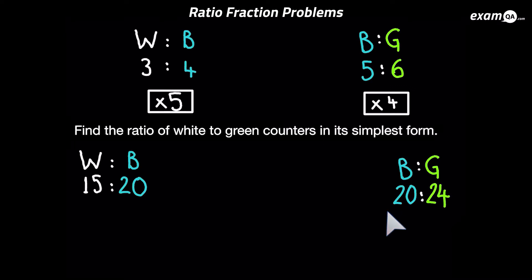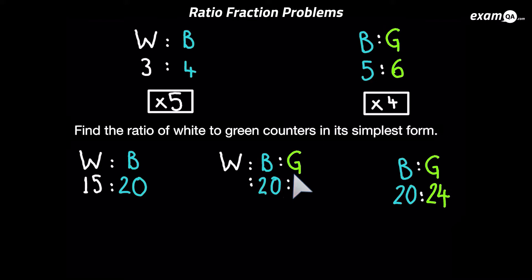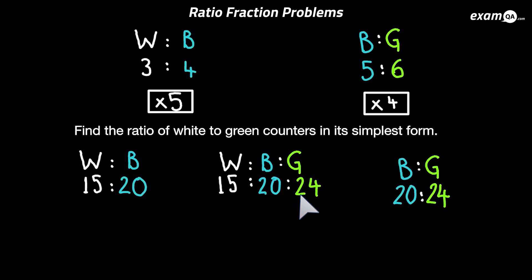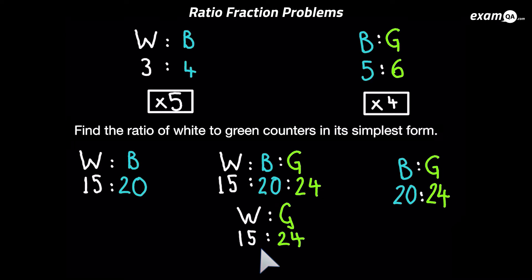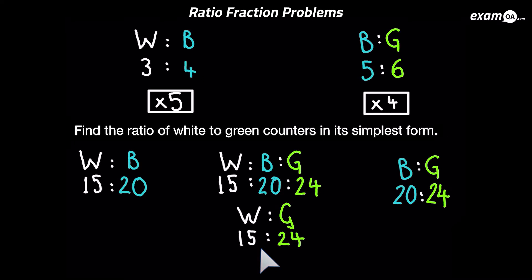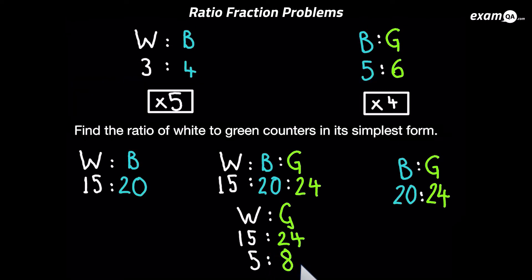Now we can draw a comparison between all three colors and write a ratio for white to blue to green. Blue is 20, white is 15, and green is 24. The question wants the ratio for white to green, which is 15 to 24. Just like a fraction, we can simplify — three goes into both, so dividing both by three gives us five to eight.